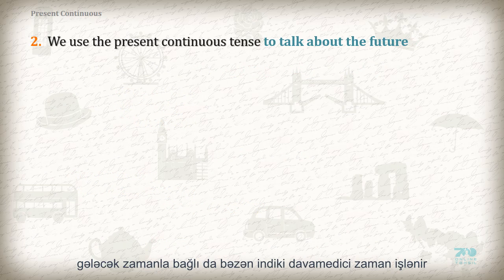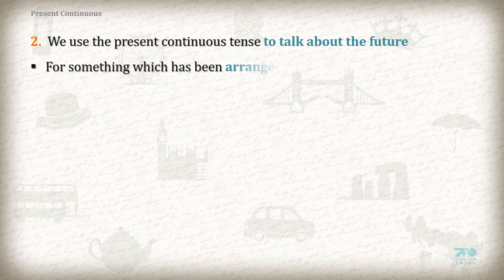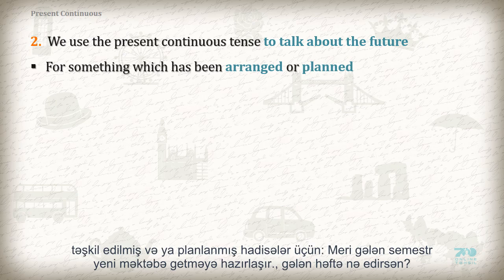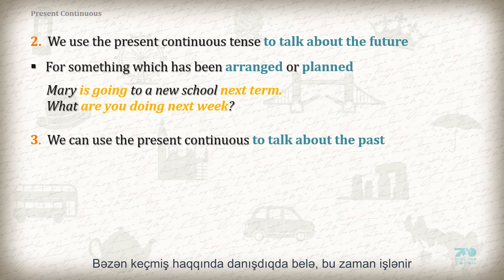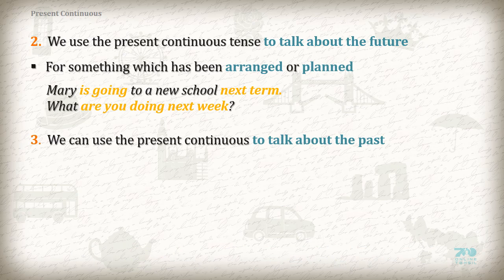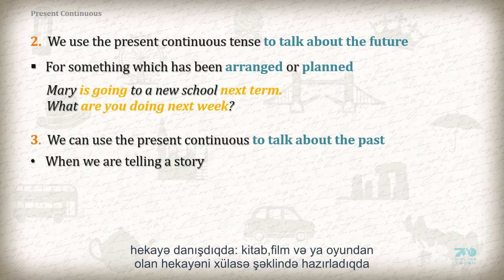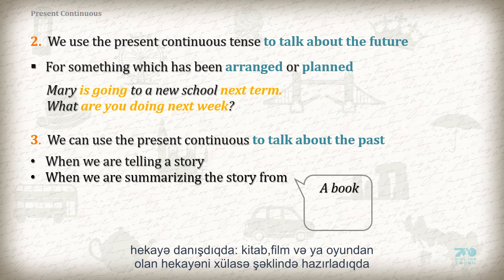We use the Present Continuous to talk about the future — for something which has been arranged or planned: 'Mary is going to a new school next term.' 'What are you doing next week?' We can also use the Present Continuous to talk about the past when we are telling a story, or summarizing the story from a book, film, or play.